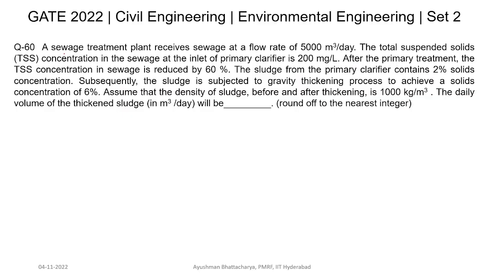Question number 60: A sewage treatment plant receives sewage at a flow rate of 5000 m³ per day. The total suspended solid concentration in the sewage at the inlet of the primary clarifier is 200 mg per liter. After primary treatment, the total suspended solid concentration is reduced by 60%. The sludge from the primary clarifier contains 2% solid concentration. Subsequently, the sludge is subjected to gravity thickening to achieve a solid concentration of 6%. Assume the density of sludge before and after thickening is 1000 kg per m³. The daily volume of thickened sludge will be?